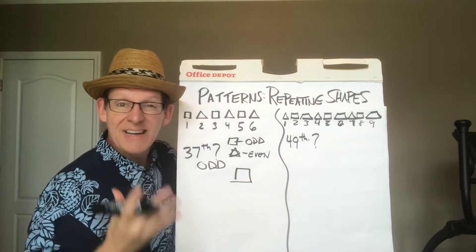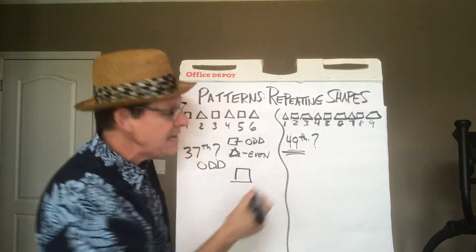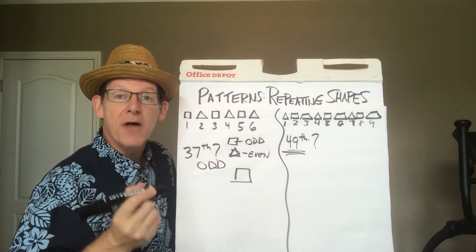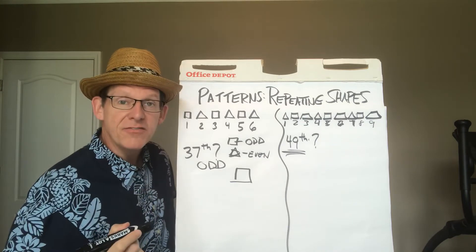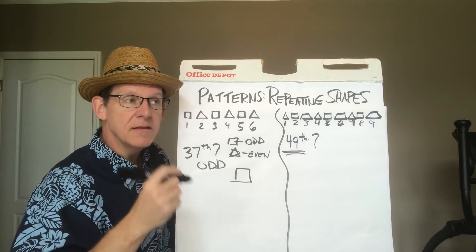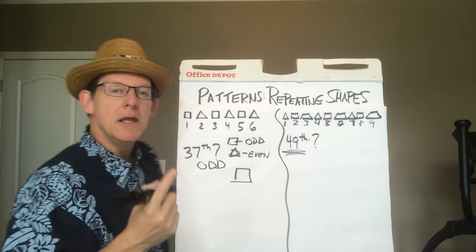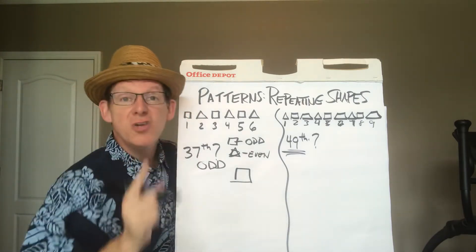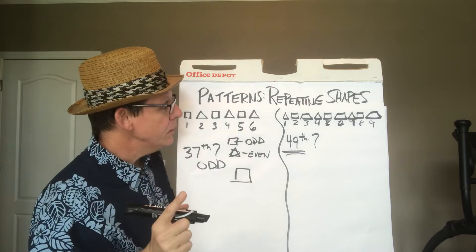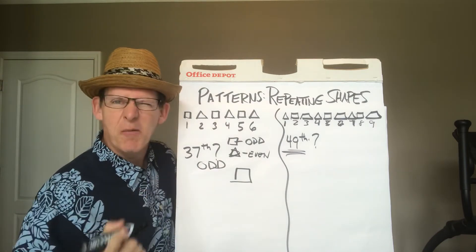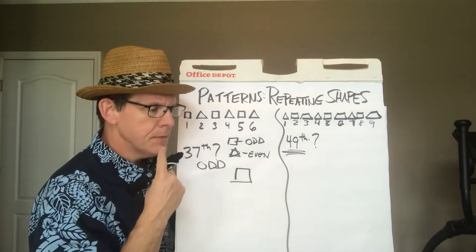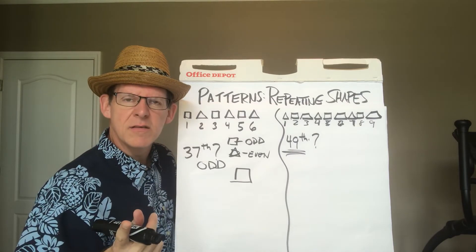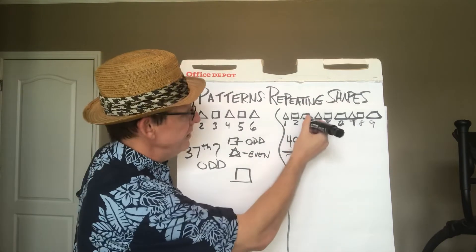Because what I need to do is I need to figure out what the 49th member of the pattern is. The 49th thing. How am I going to do that? It's pretty tricky, but we can do it. What we need to do is we need to go ahead, well, let's look at, what if I count by something? Can I count by threes?